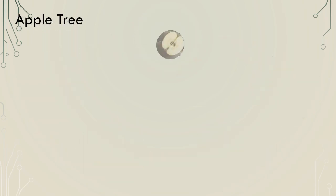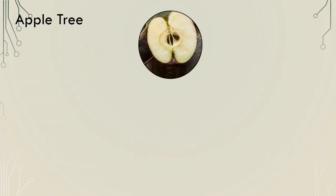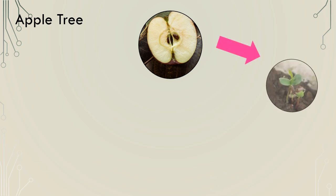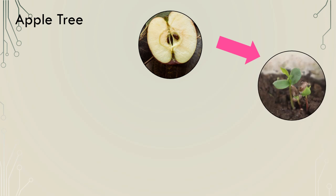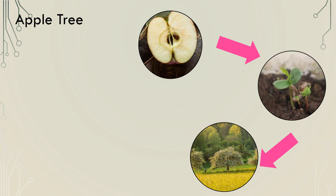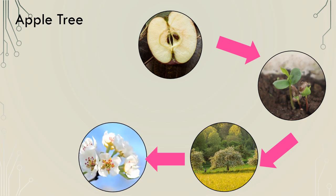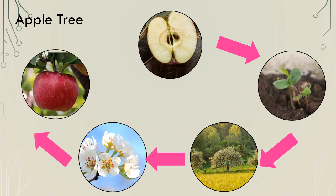Now let's look at the life cycle of an apple tree. Once again the seeds are found inside the fruit. Planted in the right conditions these can grow into seedlings. The tree will continue to grow into an adult plant. Next it will produce pretty pink flowers known as blossom. Once pollinated, the tree will be able to produce apples with the seeds inside, ready for the life cycle to begin again.